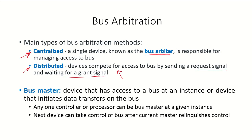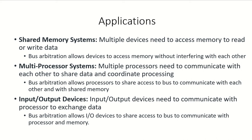In the centralized method, one single device is responsible for managing the bus. The bus master refers to the device that has access to the bus at a given instance, or the device that initiates data transfers on the bus. Bus arbitration hands over the bus to one device for data transfer, and any controller or processor can be the bus master at a given instance. The next device can take control only after the current master relinquishes control.